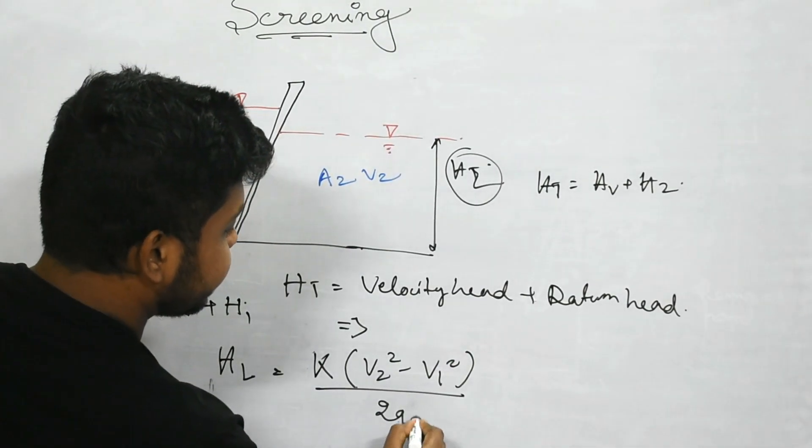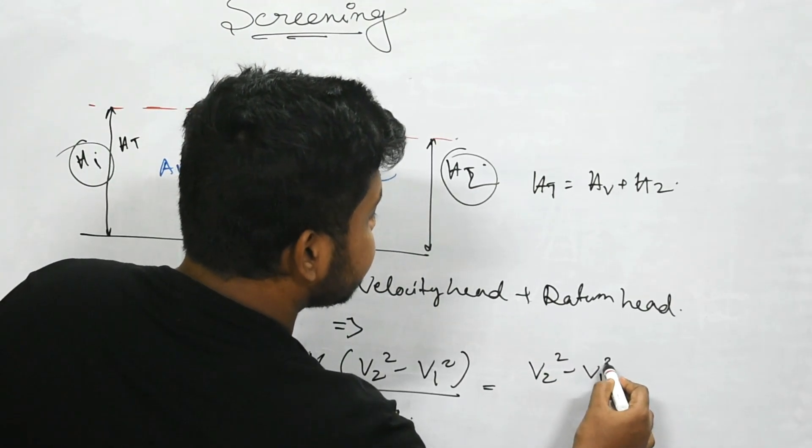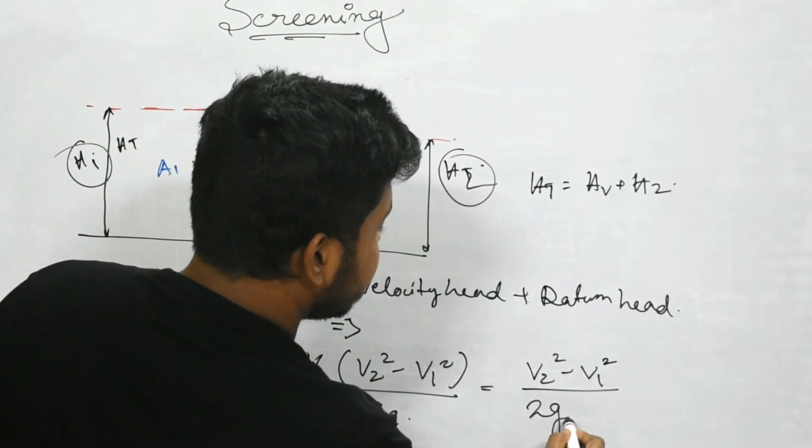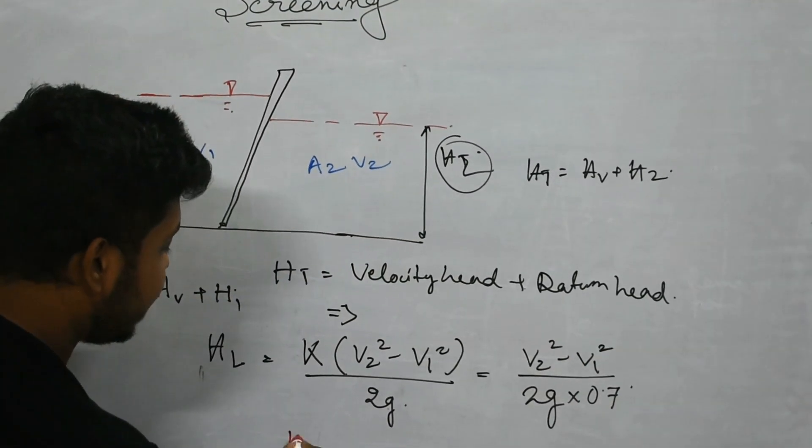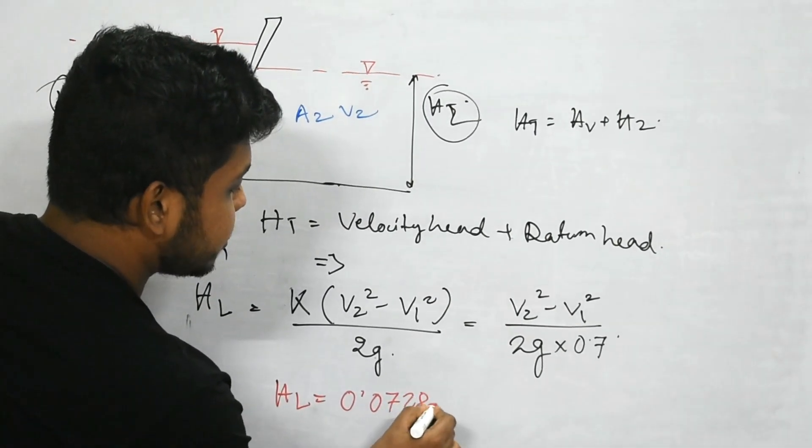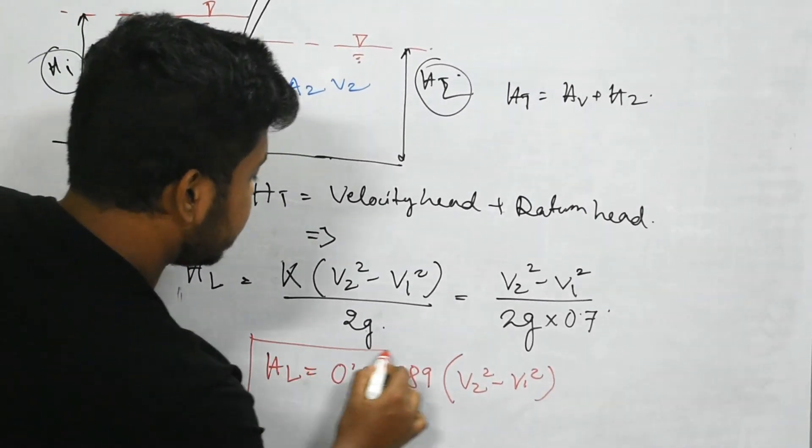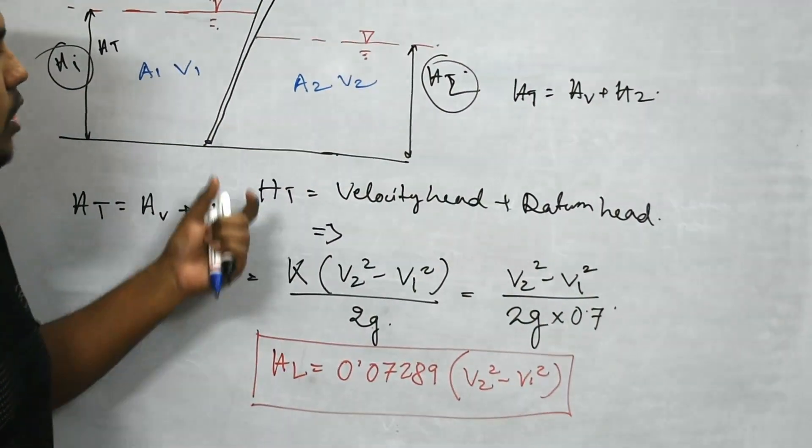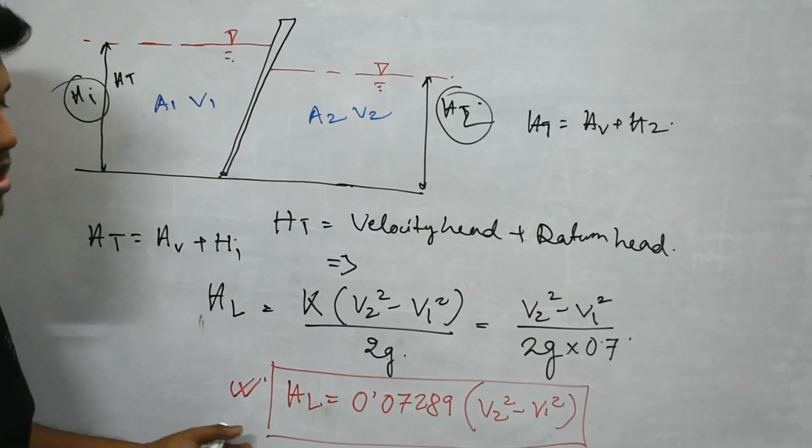This is an empirical formula so we get hl equals 0.07289 into v2 square minus v1 square. This is the formula for the head loss occurring here and this is important for exam point of view.